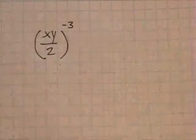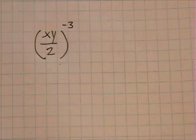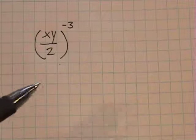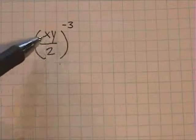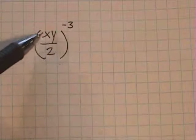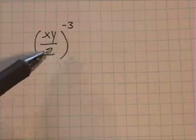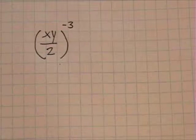Now if you have parentheses on a fraction and you want to change the sign of the exponent, all you do is just flip this fraction. So the bottom now becomes the top, and the top is now the bottom. And then you change the sign from a negative to a positive.